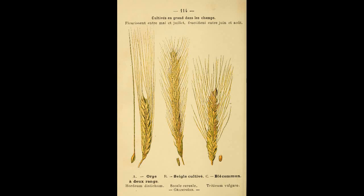Utilizing genetic data, the likely ancestor of our common rye is a population of a wild grass called Secale montanum, with some genes from other species like Secale anatolicum and Secale vavilovii, introduced through random hybridizations.